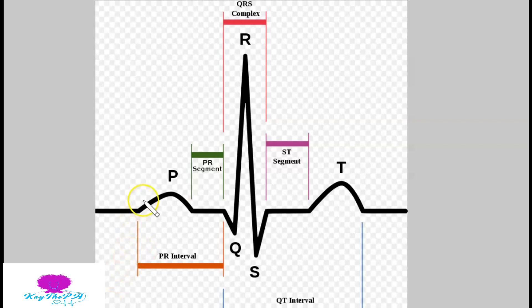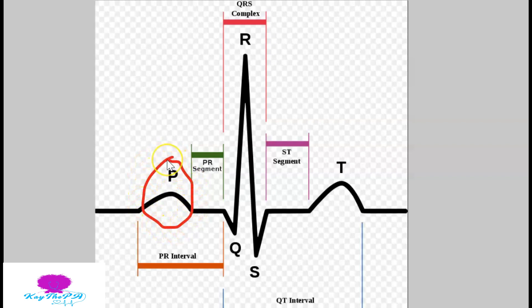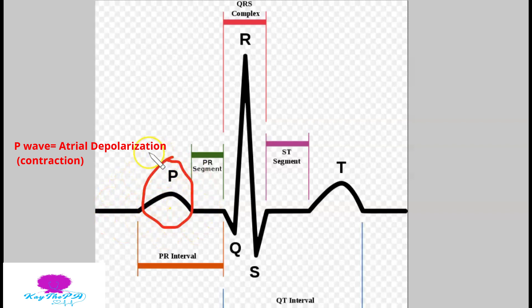Our first wave is the P wave. The P wave represents atrial depolarization. Depolarization means contraction, so this is when the atrium contracts.